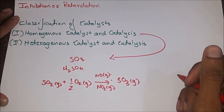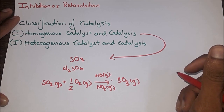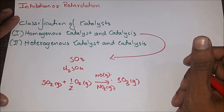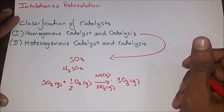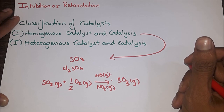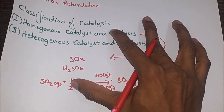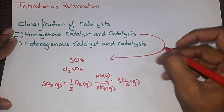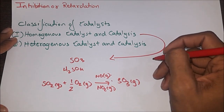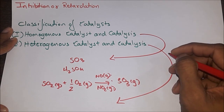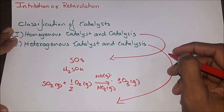Heterogeneous catalysts: A catalyst which exists in a different phase from the reactants is known as a heterogeneous catalyst. Heterogeneous catalysts are generally solids, and the reactants are either gaseous or liquid. The solid catalyst is added to the reaction mixture and does not dissolve in the reacting system. The reaction occurs on the surface of the solid catalyst; hence the reactions so catalyzed are called surface reactions. For example, the hydrogenation of unsaturated compounds is catalyzed by finely divided metals like nickel or platinum.